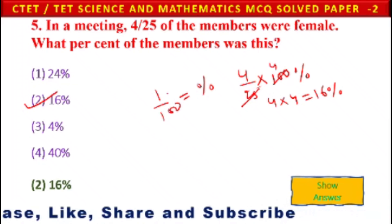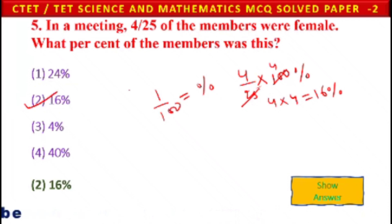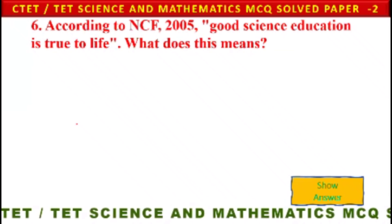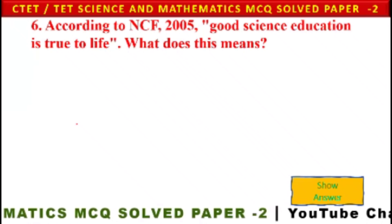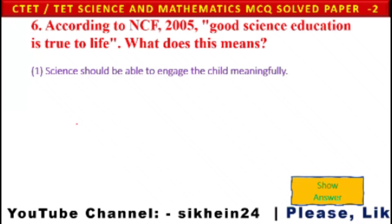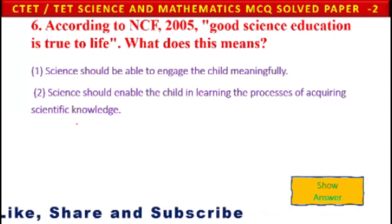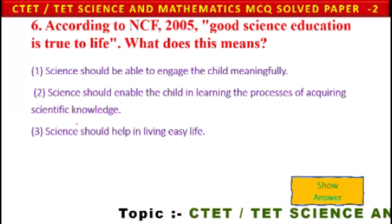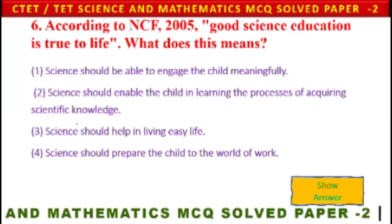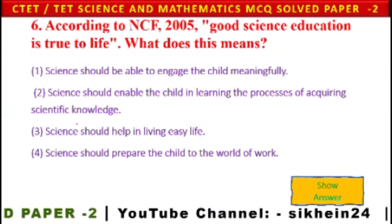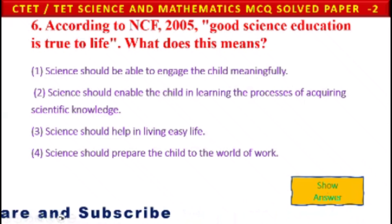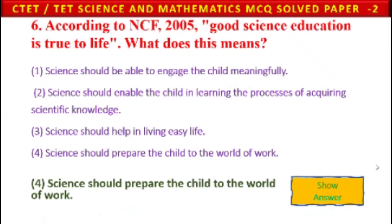Next question: According to NCF 2005, good science education is 'true to life.' What does this mean? 1) Science would be able to engage the child meaningfully, 2) science should enable the child in learning the processes of acquiring scientific knowledge, 3) science should help in living an easy life, 4) science would prepare the child for the world of work. Option 1 is the appropriate answer.